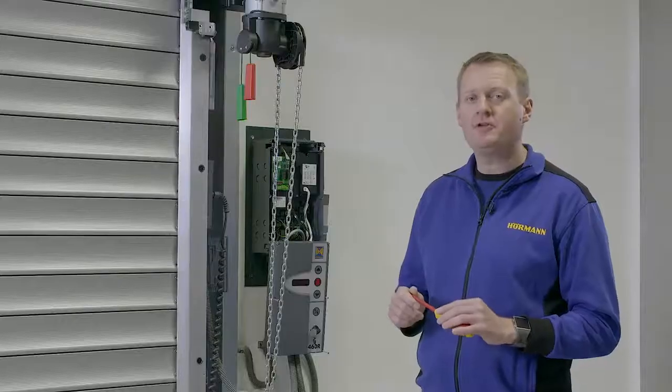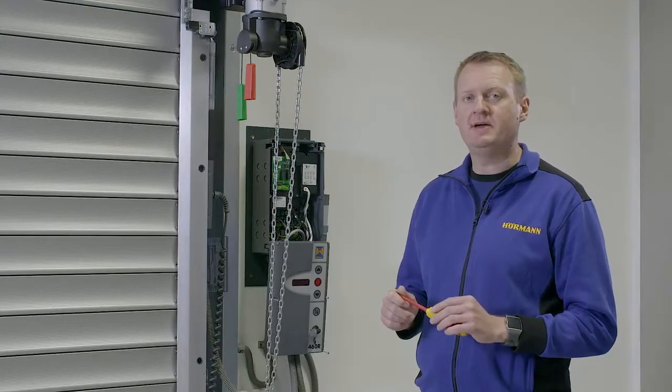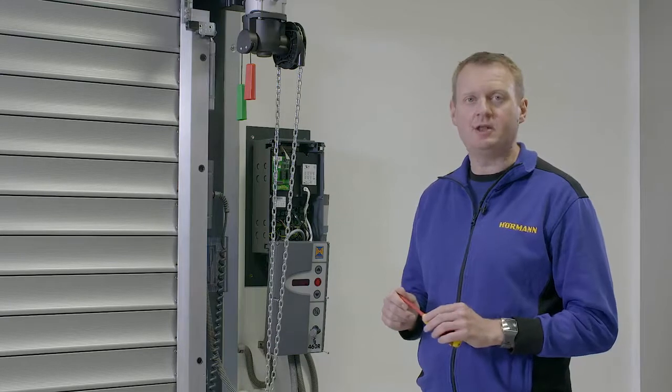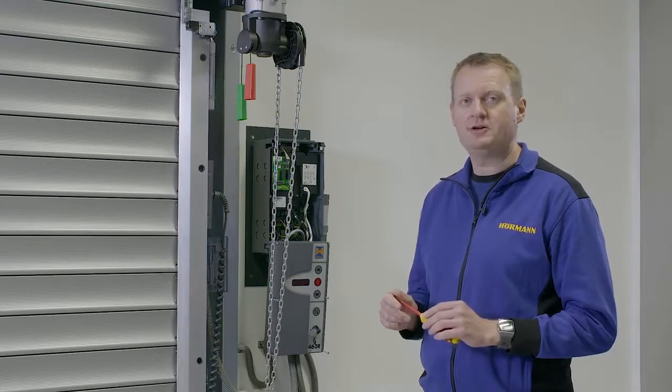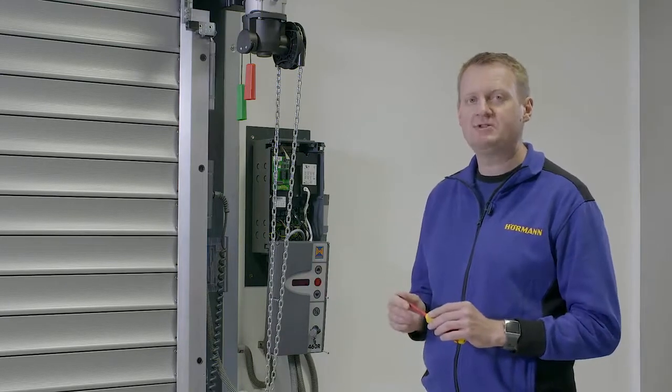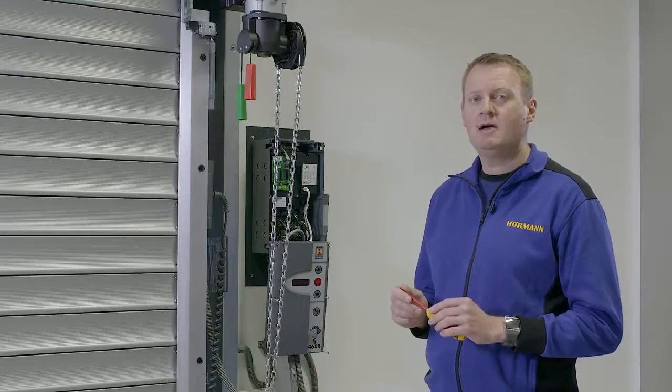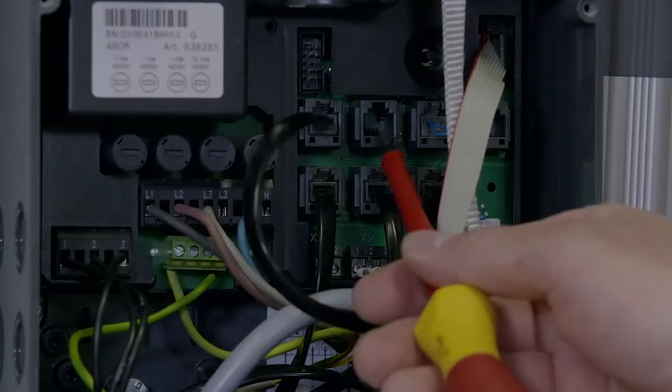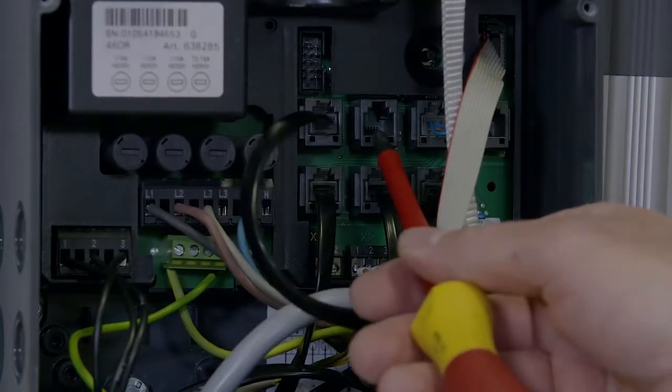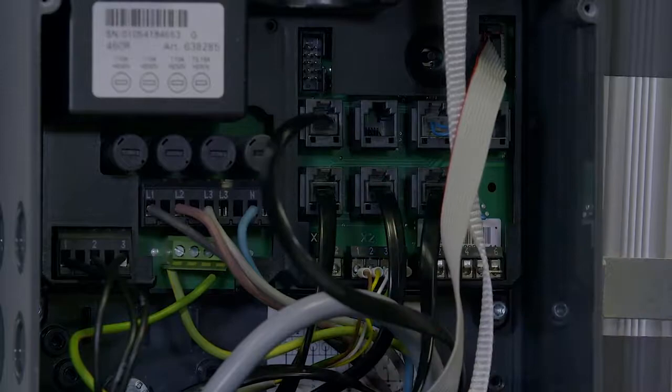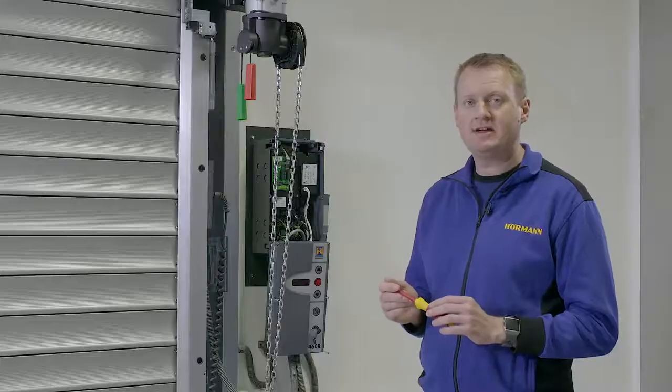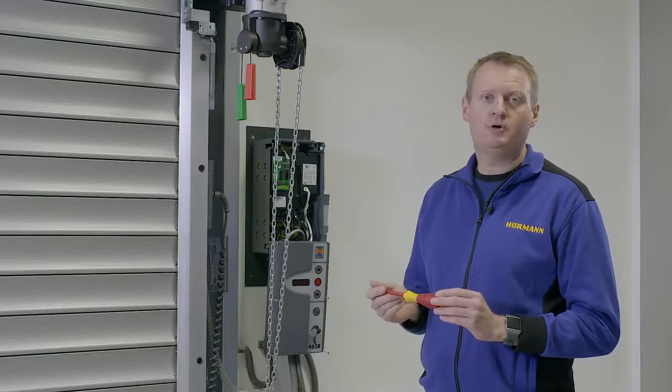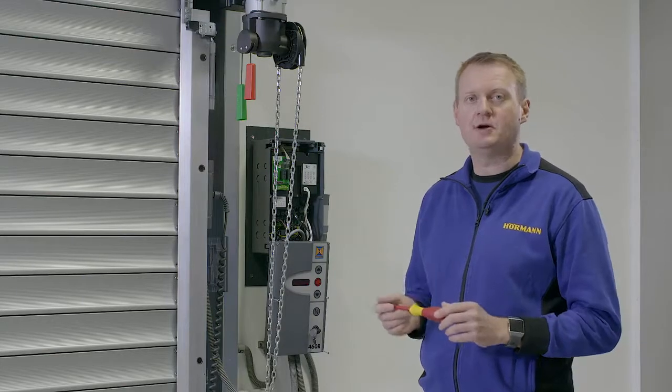If none of the above work, check the type of limits in the motor. Digital limits are plugged into x40 on the control and program 00 is set to 00. If cam limits are in the motor, they're plugged into x42 on the control and program 00 is set to 01. We use this if we're upgrading an old Horman control system using the existing motor.